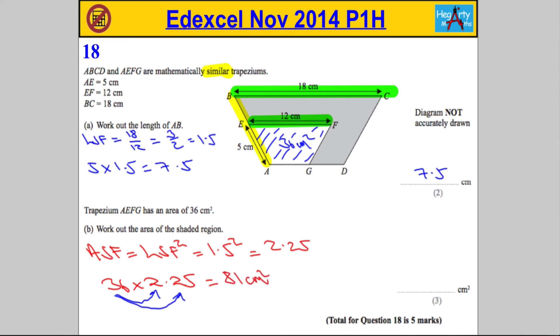81 centimeters squared. So that means the shaded region is going to be found by doing 81 centimeters squared minus the 36, so subtracting 36.